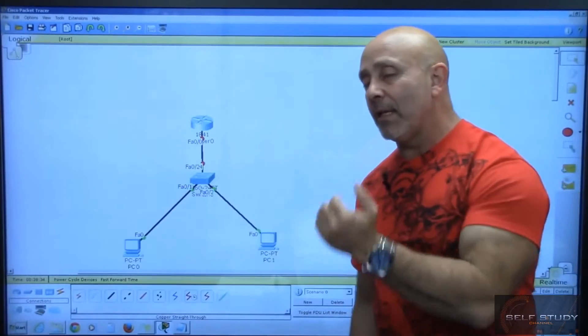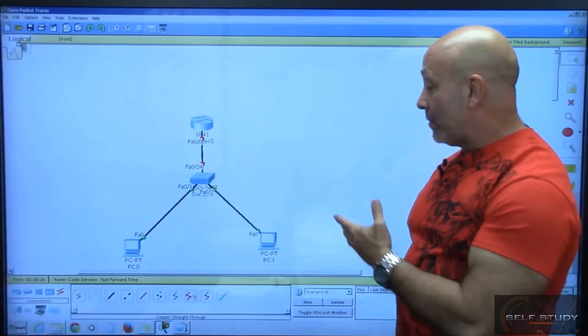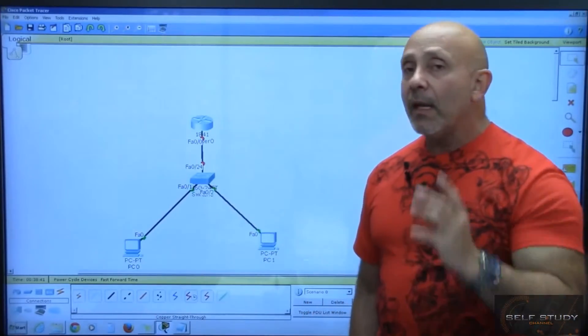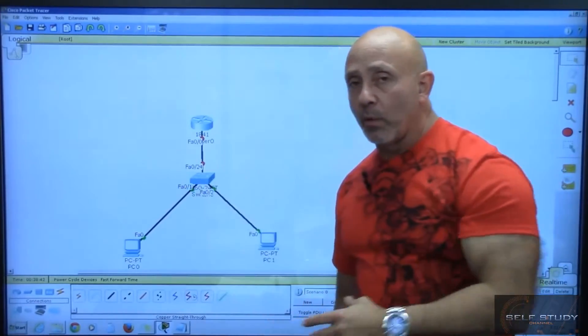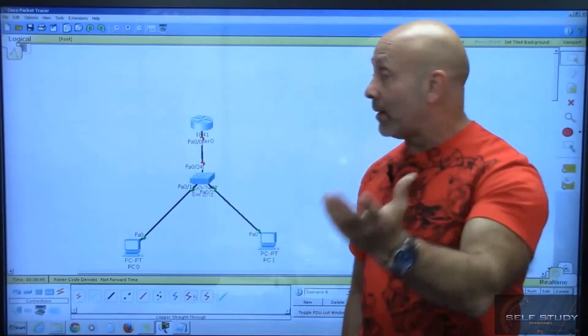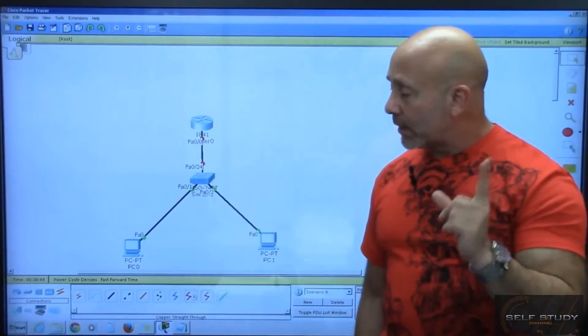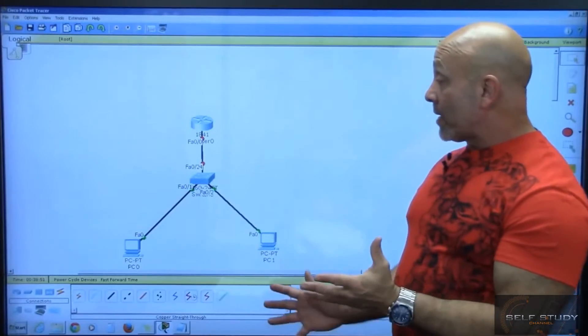But since we have one broadcast domain, what does that mean? That means that every time that this PC1 or PC0 is doing something that's trying to access the network, whether it be for a printer or trying to get to the internet through the router, the other PC will hear that noise. Keep that in mind. So this is it, this is how you create a simple topology.